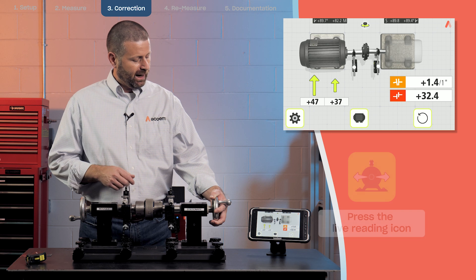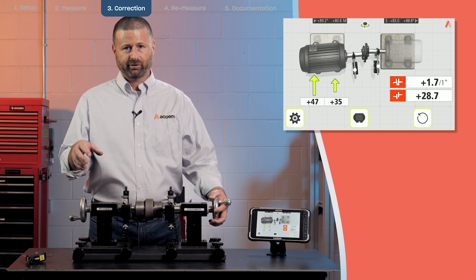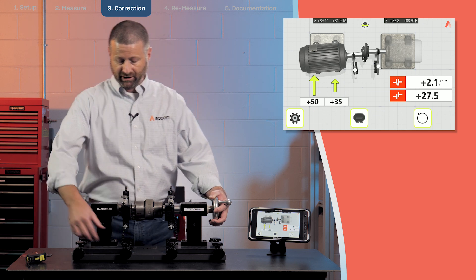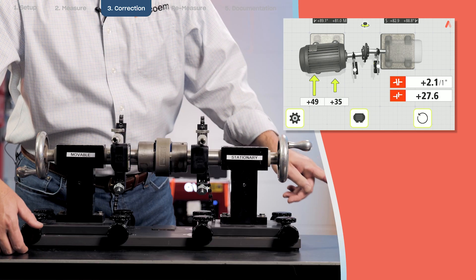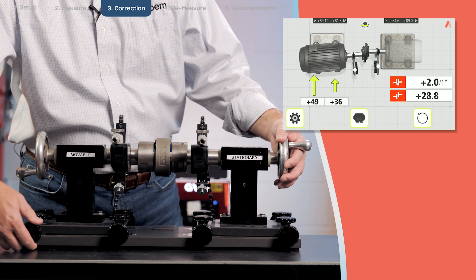So now what we have is a live picture of the horizontal. So as soon as I start moving these jack bolts, you'll see it moving on the screen. I need to go fifty thousandths in the rear and thirty five in the front. So I'm going to hit the rear one first.